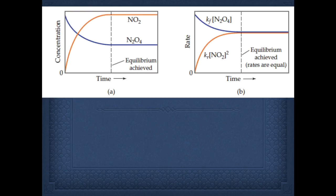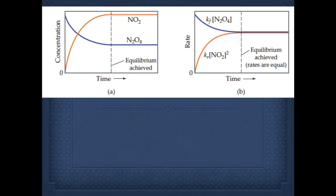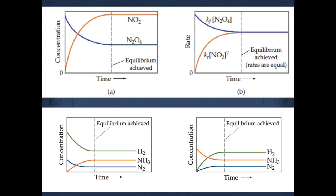Looking at these two graphs: Graph A shows that at time equals zero you have N₂O₄ but no NO₂. Even though you don't start with any NO₂, you will eventually reach equilibrium. After the dotted line, notice the y-axis is concentration — the concentrations are not equal, but they are not changing. For Graph B, the y-axis is rate, and after equilibrium is achieved, the rate at which N₂O₄ disappears and NO₂ forms are equal.